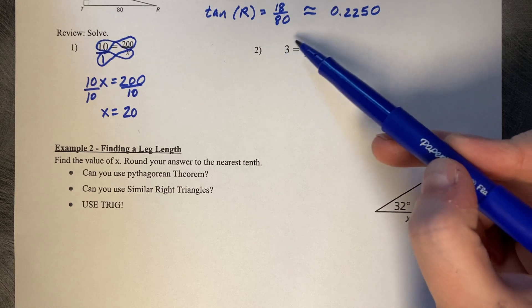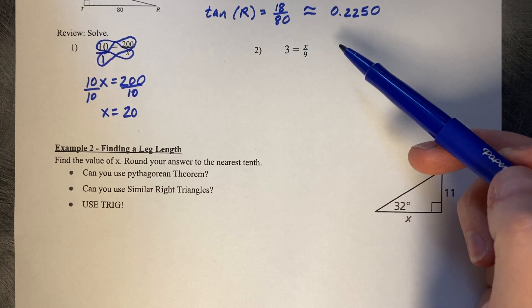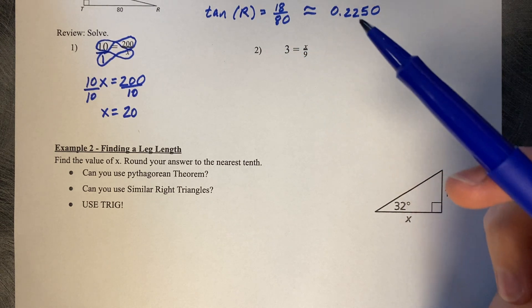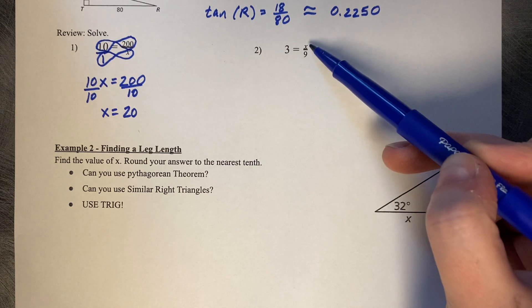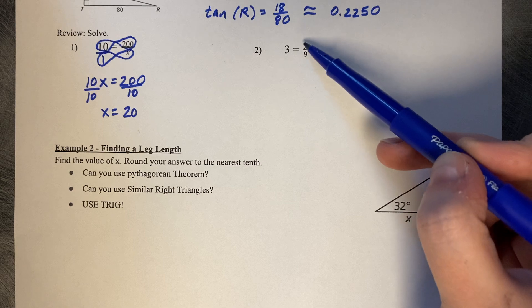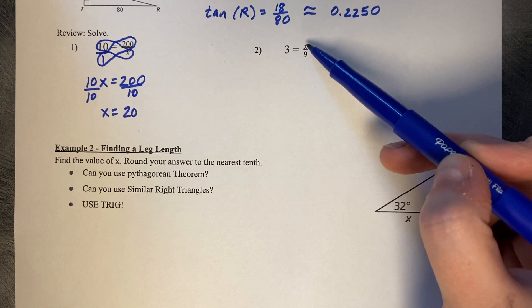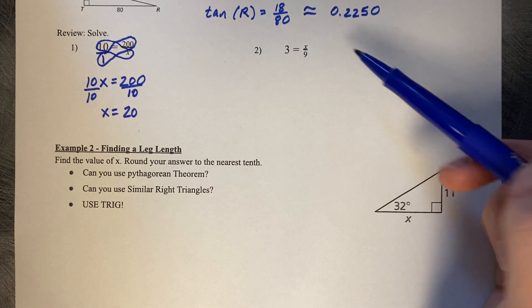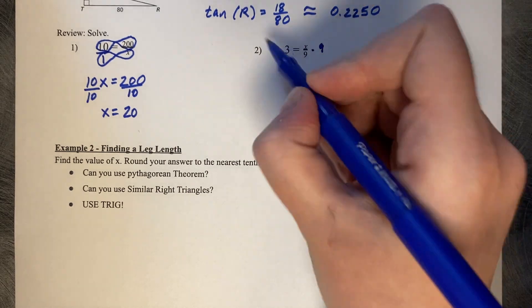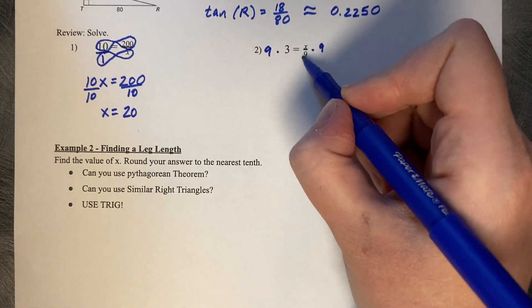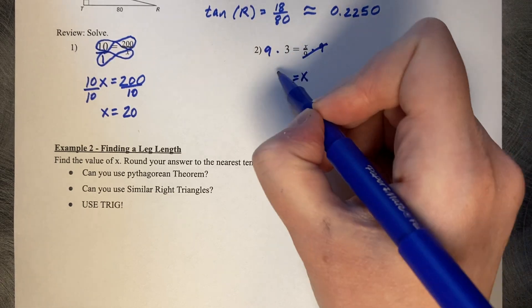Now let's take a look at this one. We can also solve this using cross-multiplying, or you can just think about on the right-hand side, we've got x divided by 9. We need to move the 9, so we multiply both sides by 9, and x will be 27.